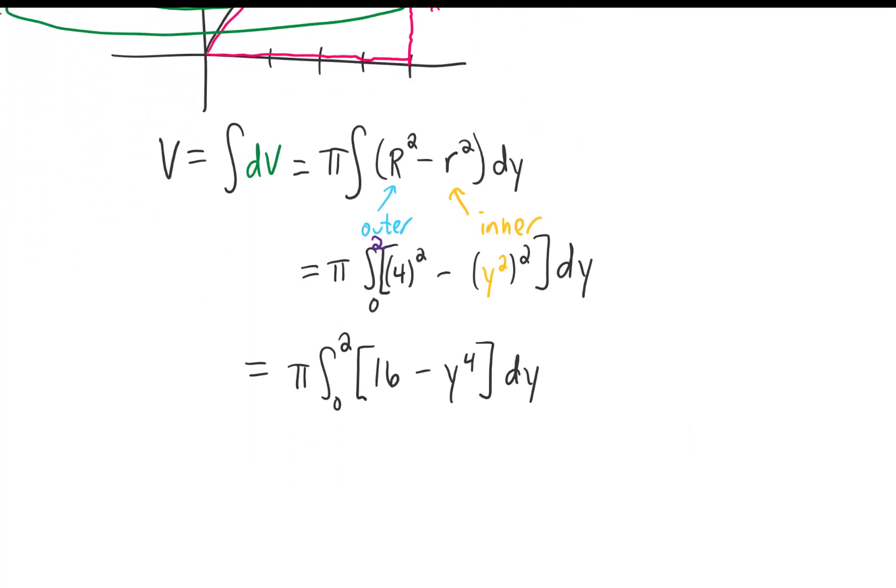Four squared is 16. Y squared squared is y to the fourth. We can integrate 16 to get 16y. We can integrate y to the fourth to get one fifth y to the fifth.